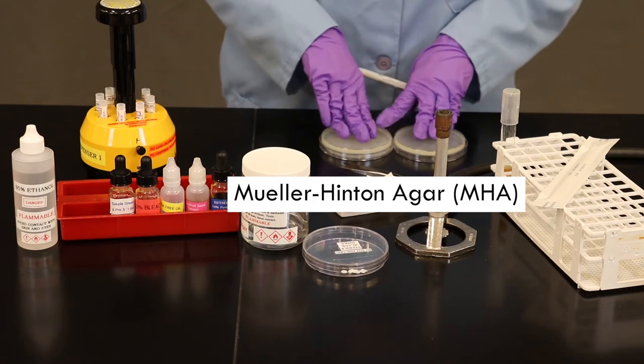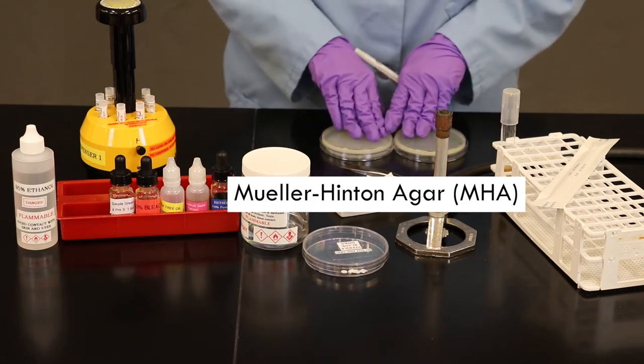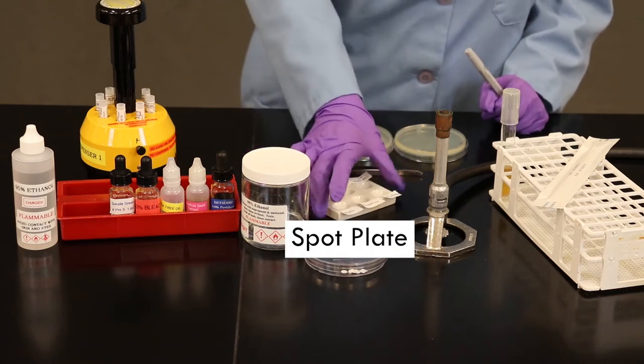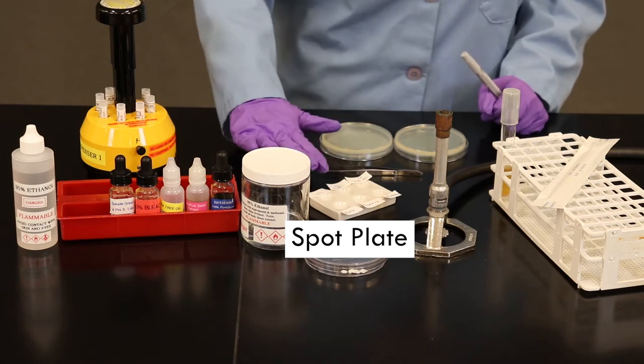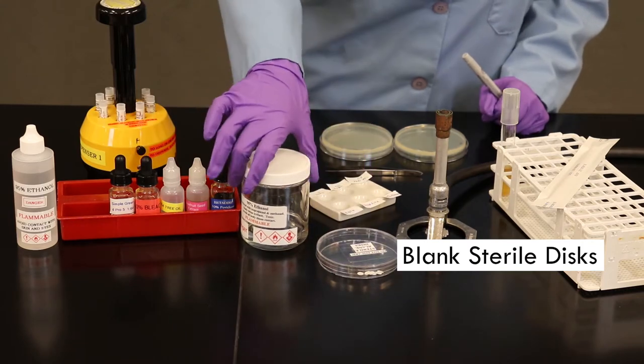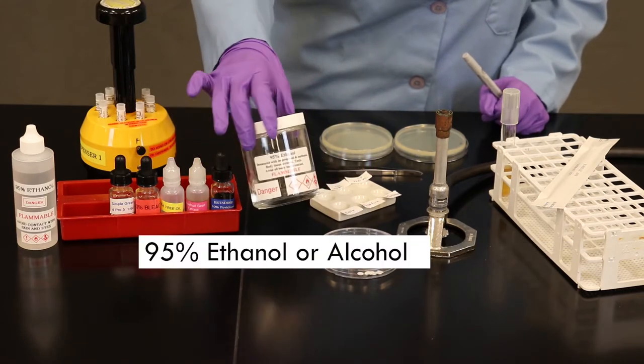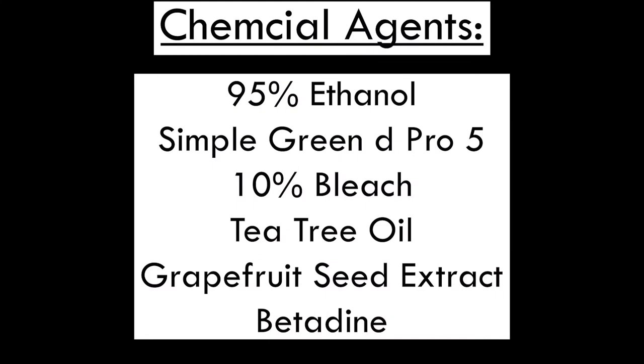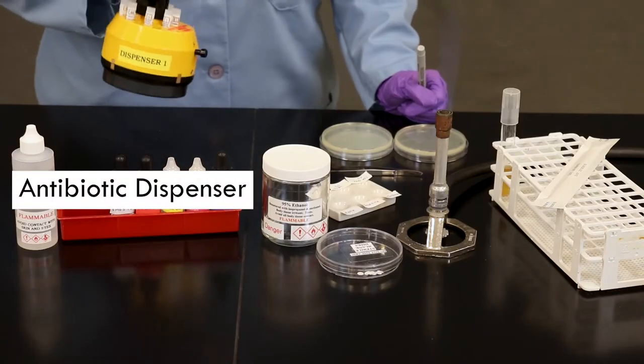We're going to learn about these in the lab manual and what this particular media does for this lab. Forceps for sterilizing, a ceramic dish that we're going to apply different chemical agents to, blank sterile discs to saturate with the chemical agents, a bottle of alcohol here for flaming our forceps, the chemical agents we wish to test, and this is our handy antibiotic dispenser.